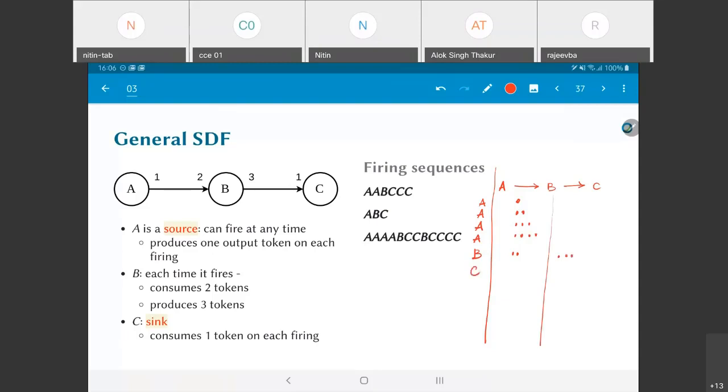Now C fires one time. This doesn't affect the A to B edge, it remains as is. It does however consume one token from the B to C edge, so that reduces to two. C fires one more time and the result is going to be this.